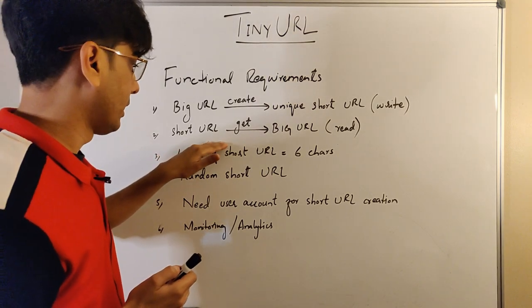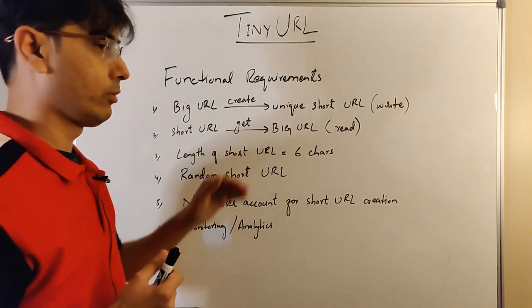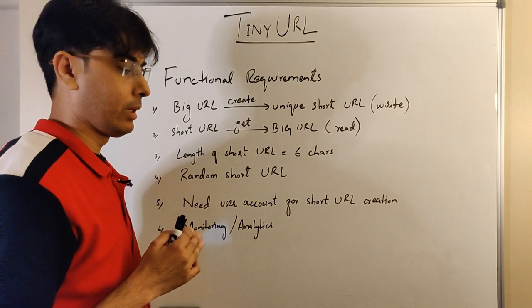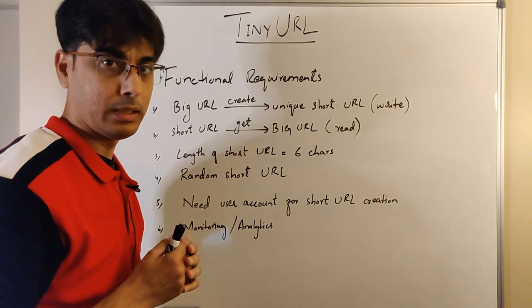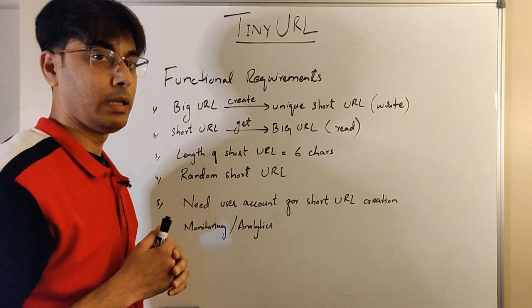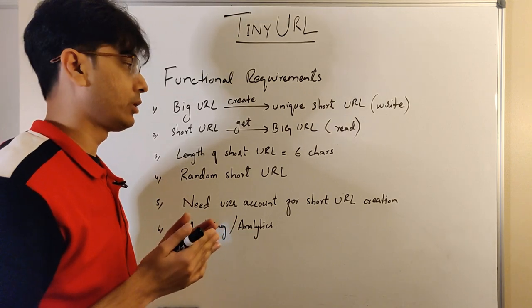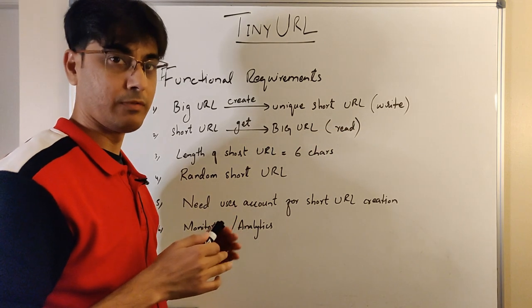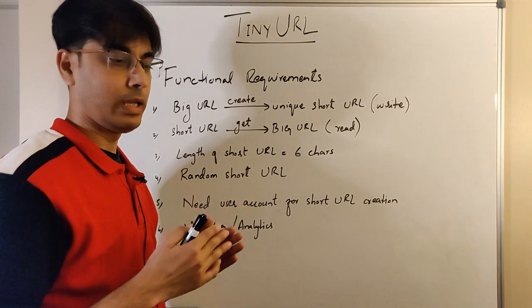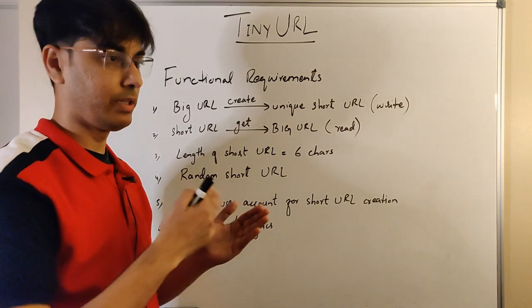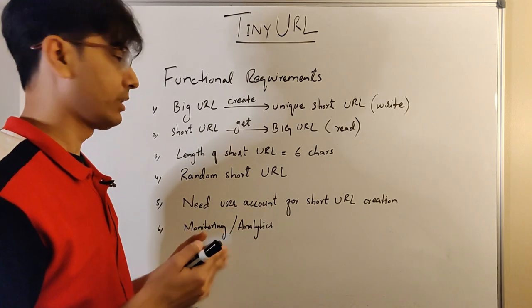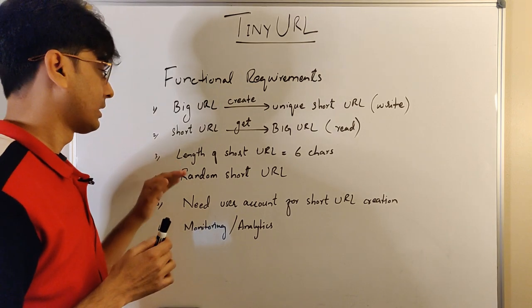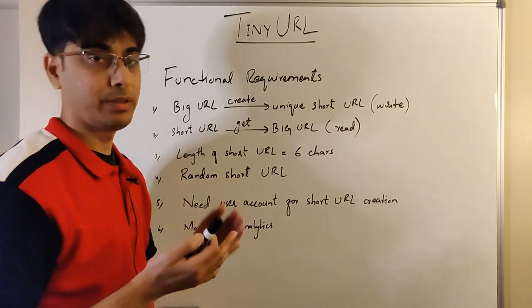The second requirement is that given a short URL, the service should be able to find the mapping for that short URL. If the mapping exists, it should return the big URL; if it doesn't exist, it should return not found. This is a read operation because we are not creating any mapping — we are just reading whether a mapping exists. The third functional requirement is that the length of the short URL should be six characters.